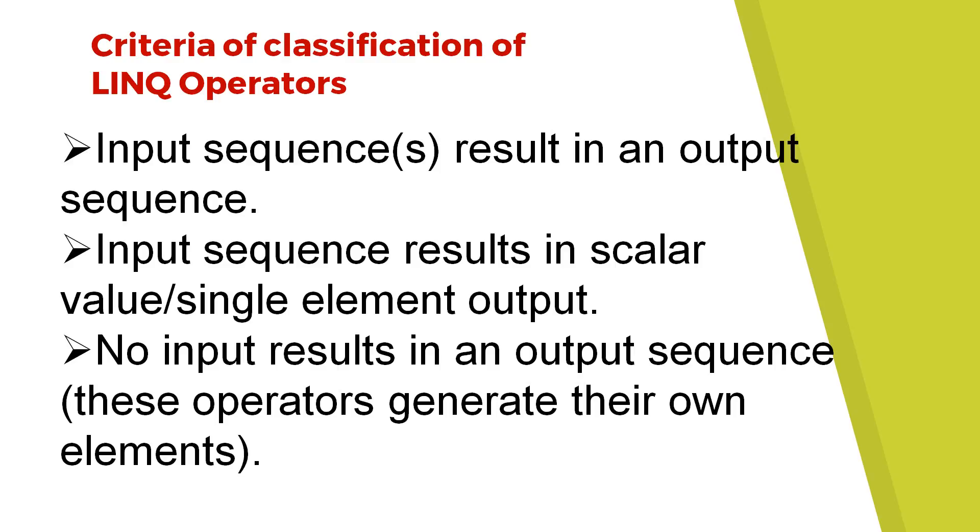Based on these criteria, there are several LINQ operator types. The first is the restriction operator. Restriction means filtering — we have a Where operator, which lets you write queries based on a condition. For example, like a SQL query: SELECT * FROM TableName WHERE City = 'value'. That is the restriction operator.